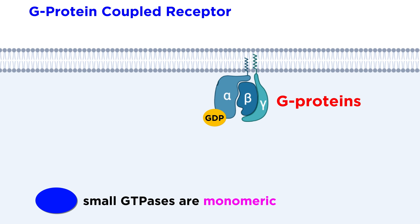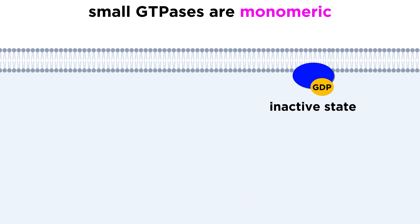Small GTPases are monomeric, rather than trimeric, but they function by similar principles as large GTPases. When the enzyme is bound to GDP, it is in its inactive state. Small G proteins are often anchored to the inner side of the cell membrane.